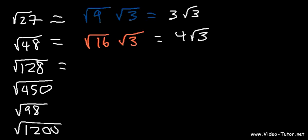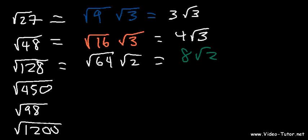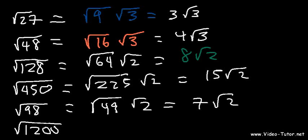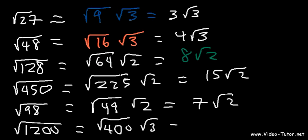What perfect square goes into 128? 128 is 64 times 2, and the square root of 64 is 8. What about 450? That's 225 times 2, and the square root of 225 is 15. For root 98, that's 49 times 2, and the square root of 49 is 7. For 1200, the largest perfect square is 400. 3 times 400 is 1200, and the square root of 400 is 20, so you get 20 root 3.